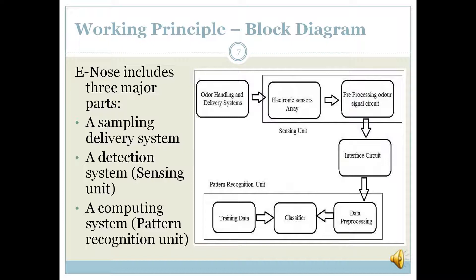The e-nose includes three major parts: a sampling delivery system, a detection system or sensing unit, and a computing system or pattern recognition unit. The sampling delivery system enables the generation of volatile compounds and injects the headspace into the detection system. The detection system consists of a sensor set — sensors, when contacted with volatile compounds, develop a change in electrical properties. This response is recorded by an electronic interface, transforming the signal into a digital value.